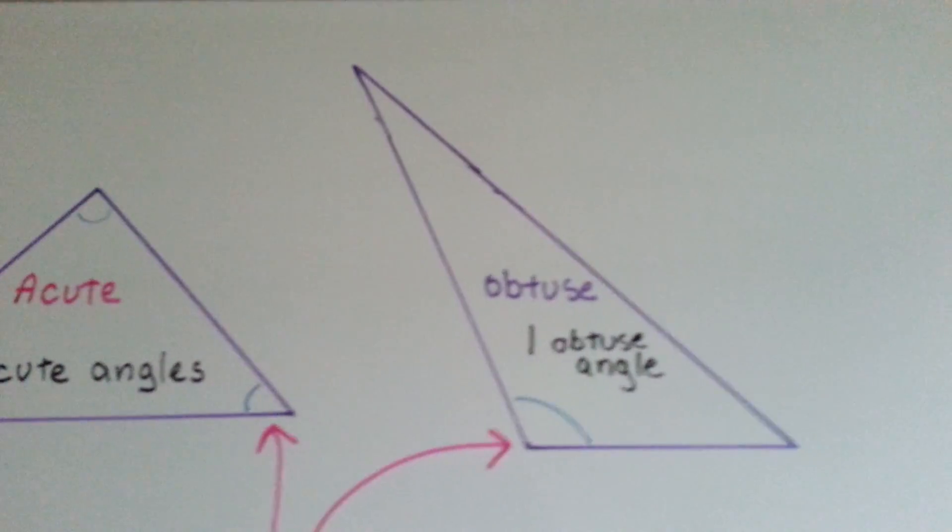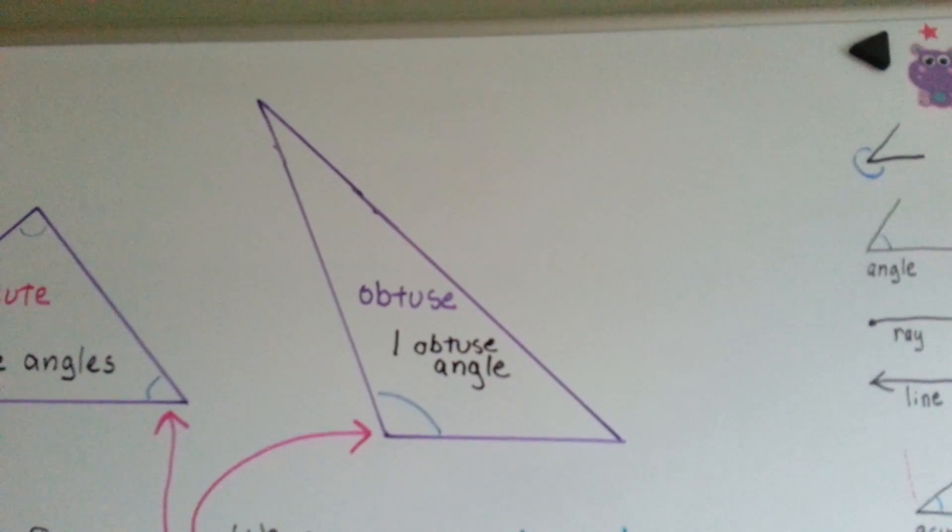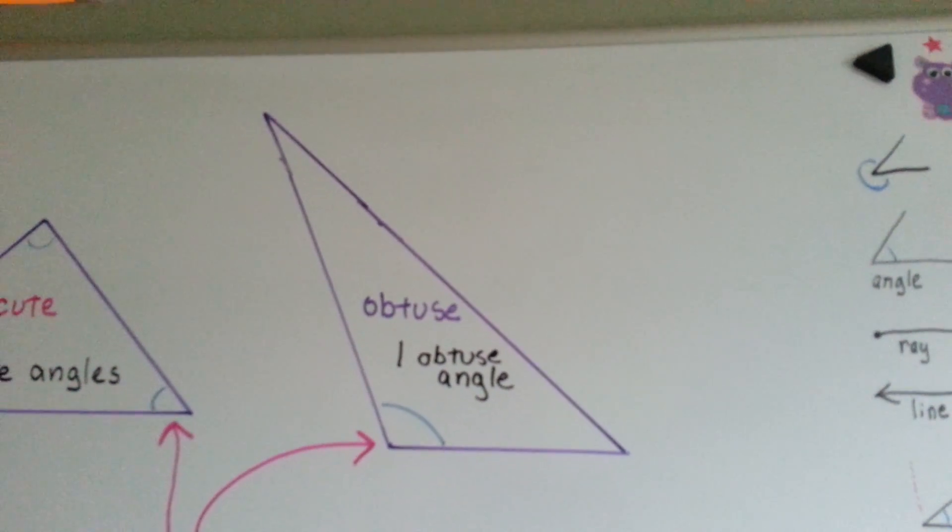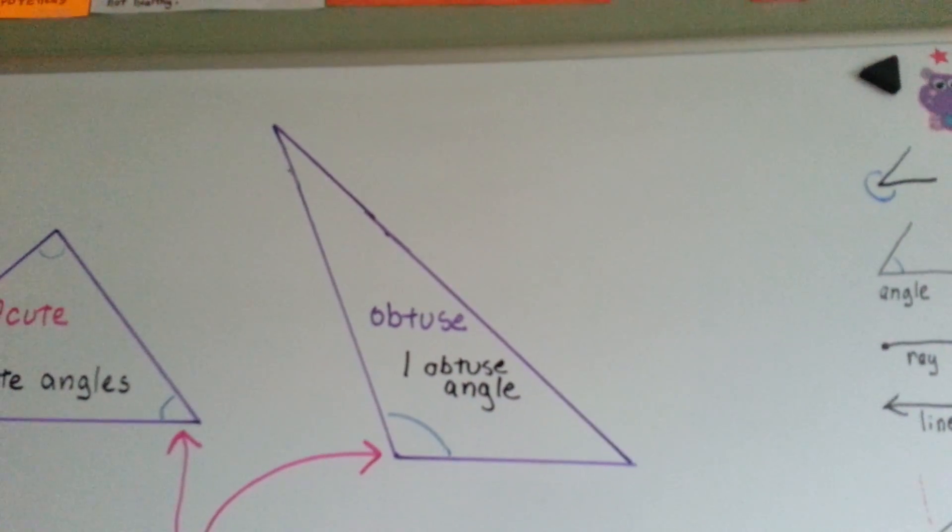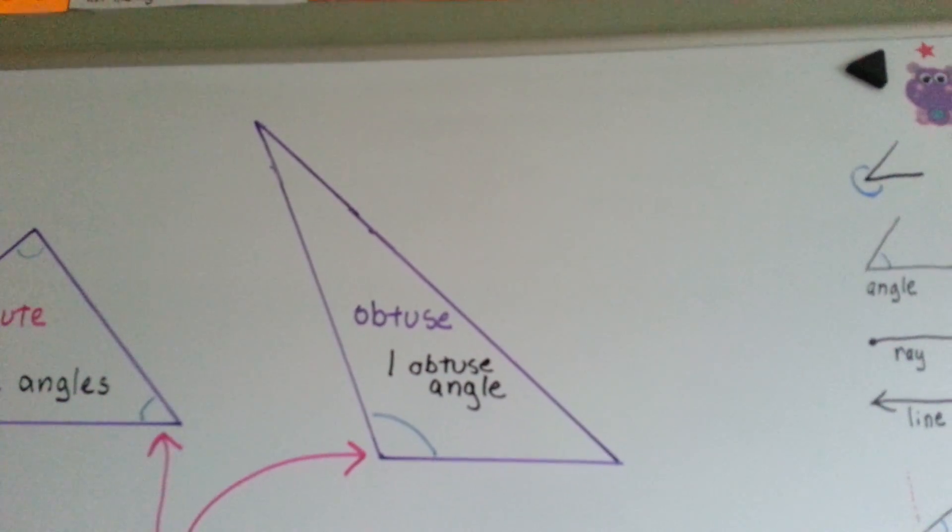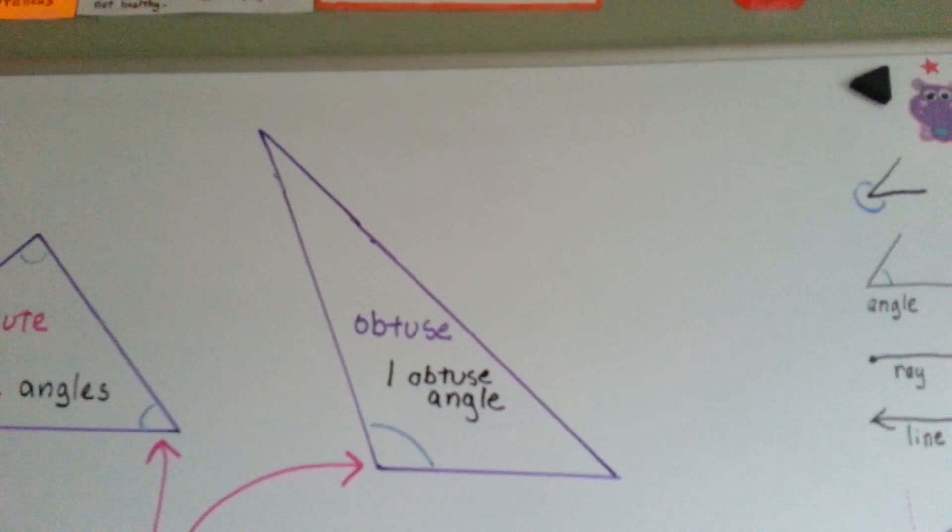An obtuse triangle has one big obtuse angle. It can't have two. If it had two obtuse angles, it wouldn't close and it wouldn't be a triangle. It can only have one. Try to draw one. I bet you can't. It's got to only have one obtuse angle.